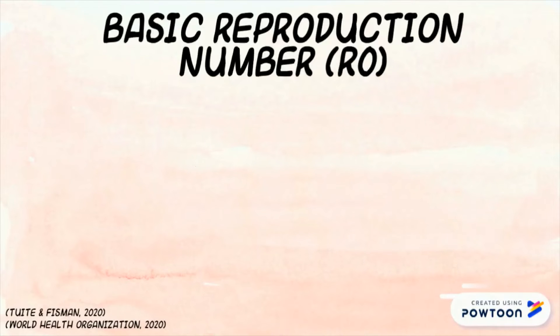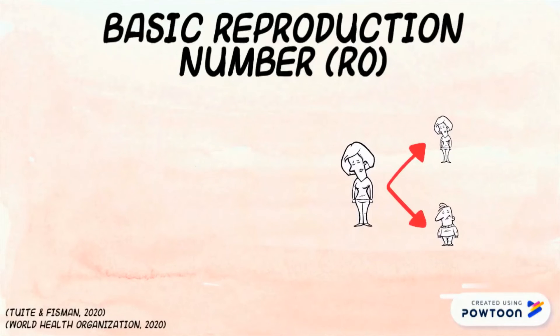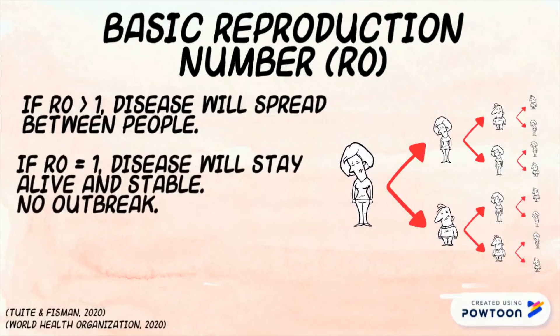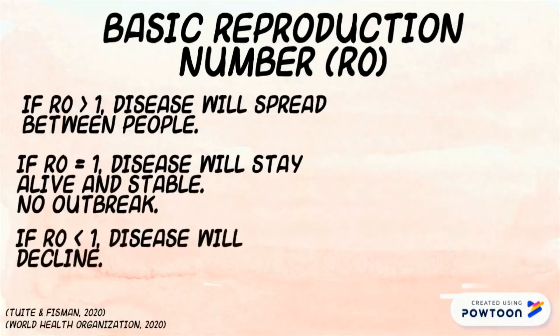Depending on the R0 value, a disease can either spread, remain stable, or decline. This number depends on the infection period, contact rate, and mode of transmission.